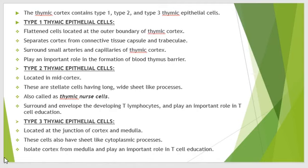Type 1 thymic epithelial cells are flattened cells located at the outer boundary of the thymic cortex. These cells separate the cortex from the connective tissue capsule and from the trabeculae. They also surround the arteries and capillaries of the thymic cortex. These cells play an important role in the formation of the blood-thymus barrier.